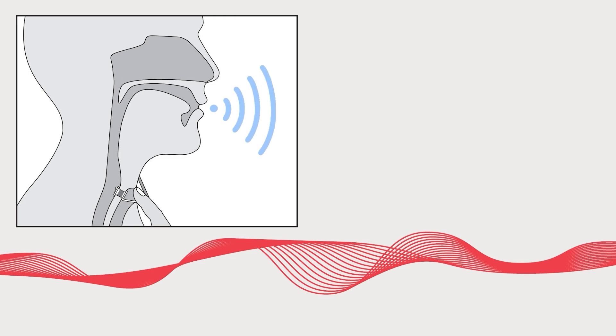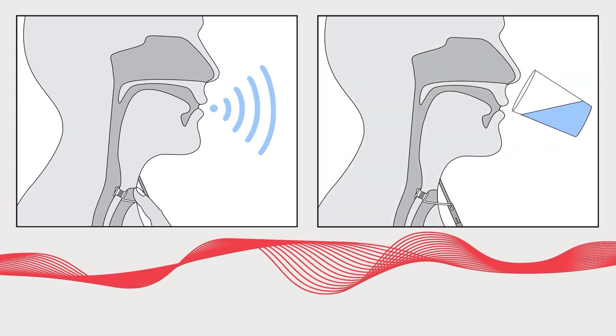Check the function of the voice prosthesis by asking the patient to speak. Once the patient is speaking fluently, ask them to drink water and observe the prosthesis to ensure no leakage is occurring.